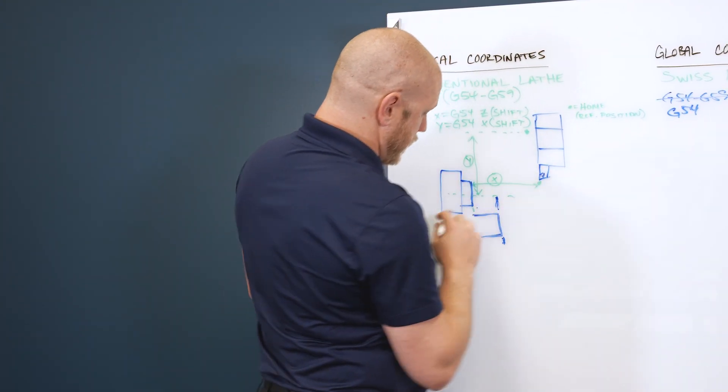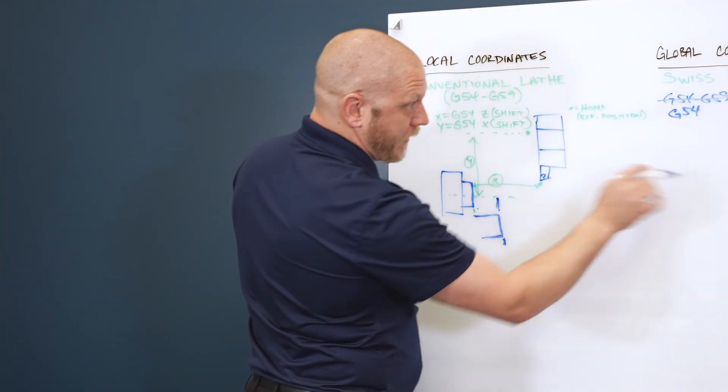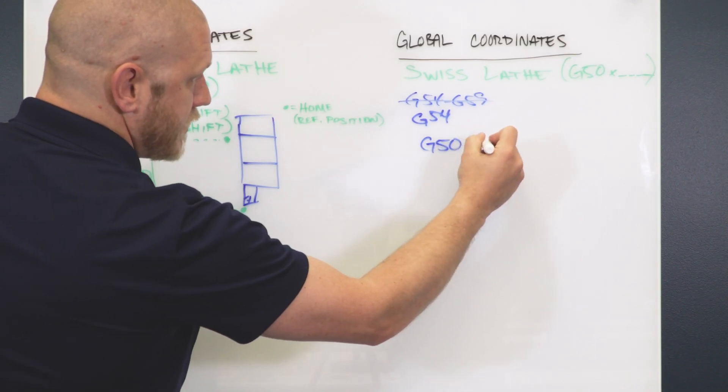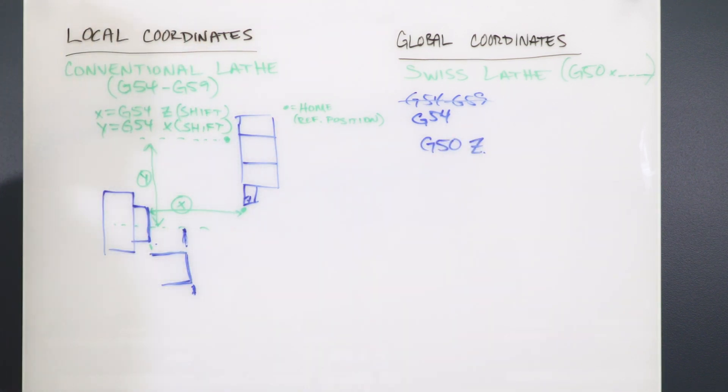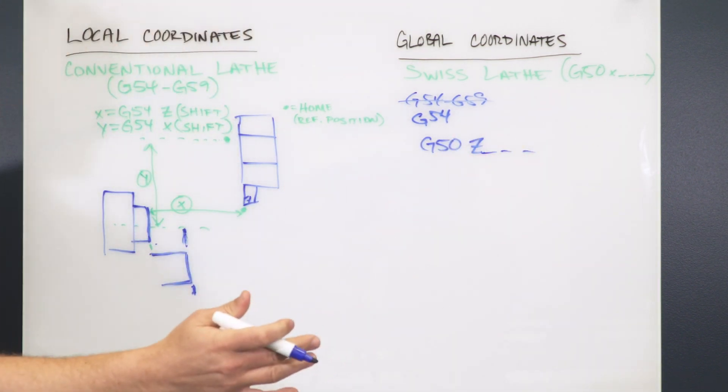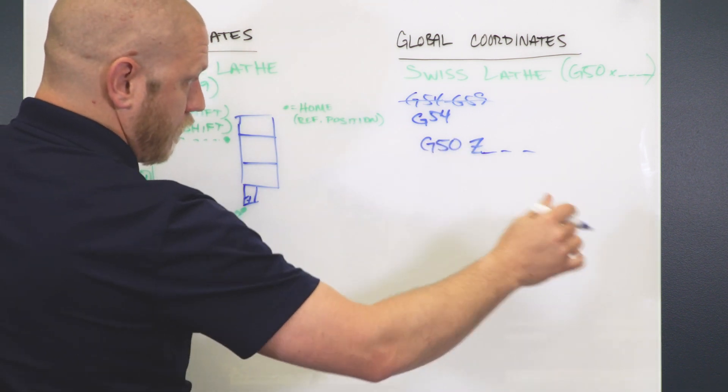So when you do a measurement, let's say we pulled out a part and you fed out a little bit further and you want a new Z0. All you would do is G50, Z, where is the new location? So you can G50 shift the axis and that's the new position.